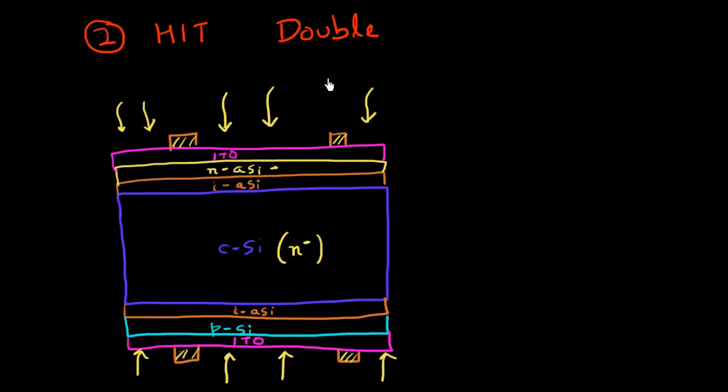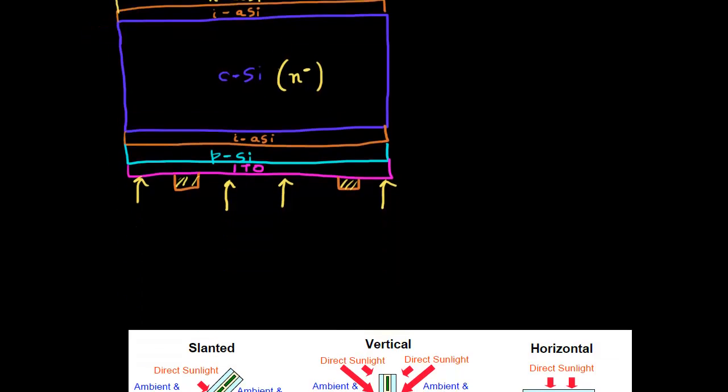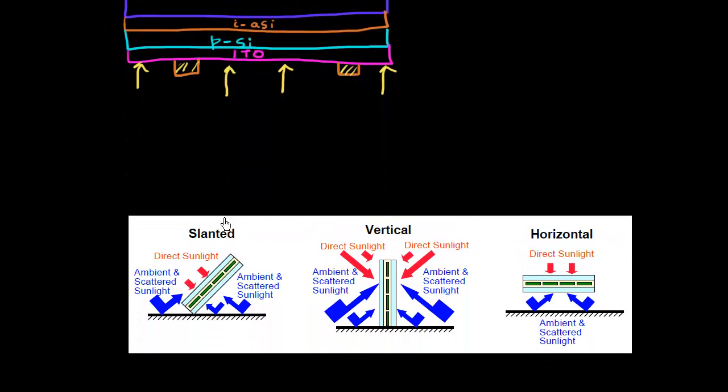Given here are some scenarios in which this might be possible. For example, you're mounting these panels at a slanted angle on a roof which is colored white so it has very good reflectivity. You could be capturing sunlight which is coming directly from the sun, but this roof, which is white in color, can also reflect light from the surface, and this could be incident from the backside of the cell. Similarly, you could also place them vertically.